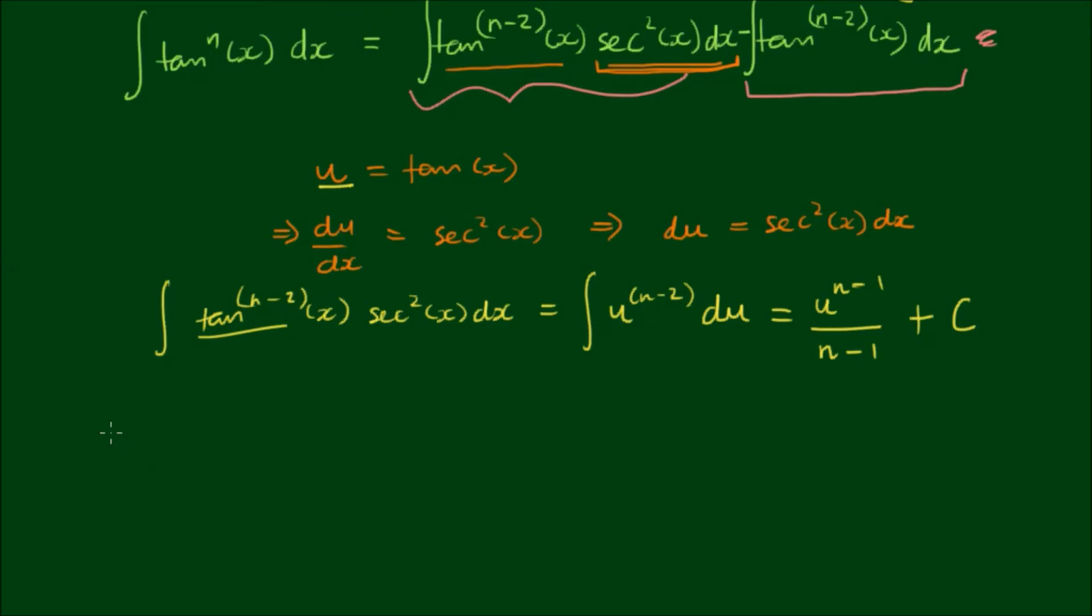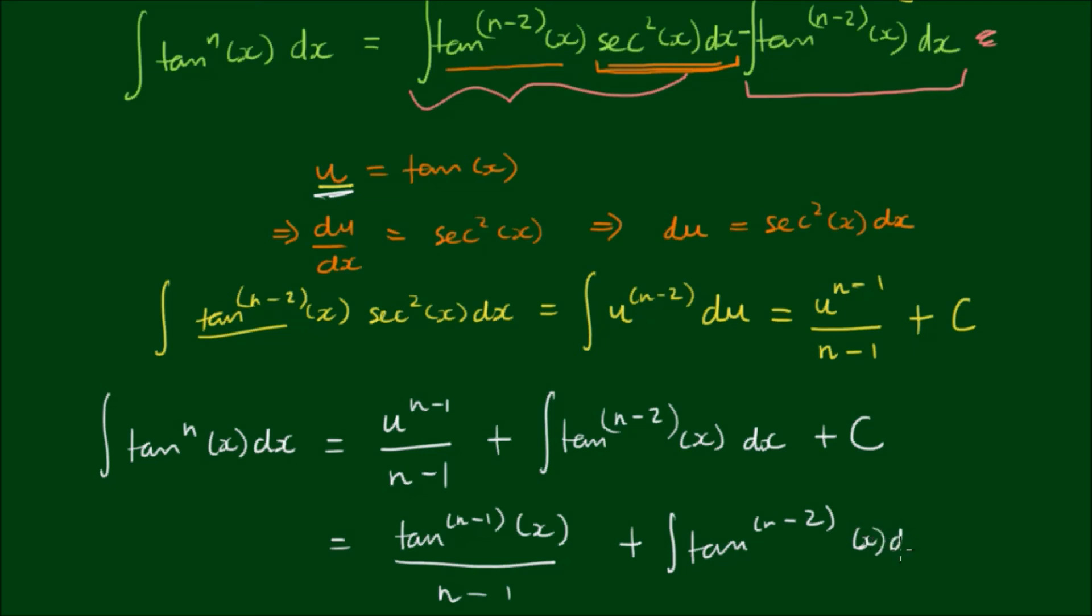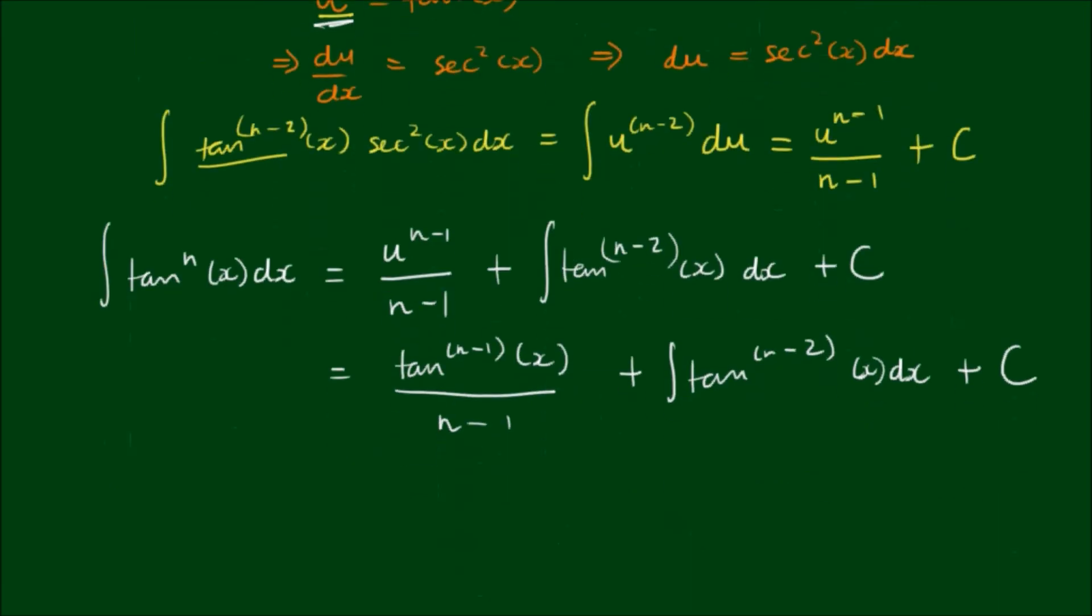Alright, we can now put the results back together. So we have tan to the nth power with respect to x. The integral of the tan to the nth power with respect to x is equal to u to the n minus 1 divided by n minus 1 plus the integral of tan to the n minus 2 power with respect to x plus the integration constant. So substituting this result back we have the integral is equal to tan to the n minus 1 power of x divided by n minus 1 plus the integral of tan to the n minus 2 power of x with respect to x plus the integration constant c.